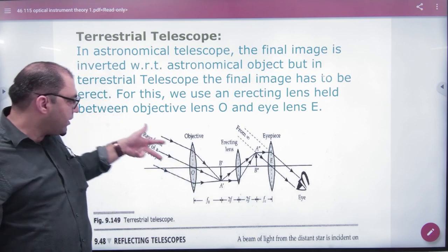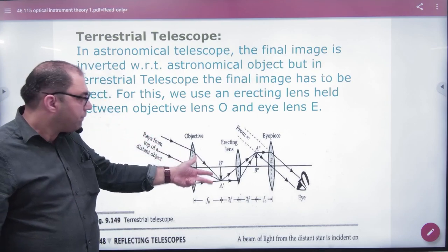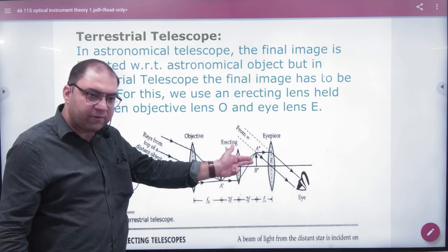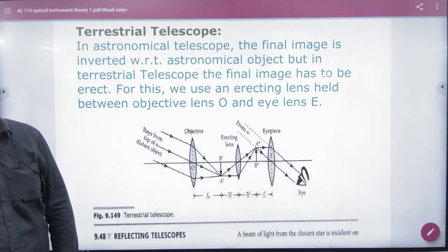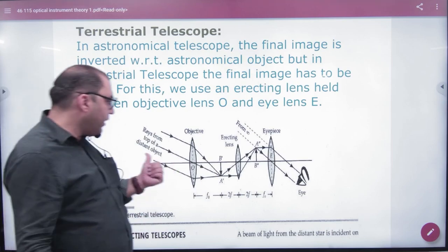How does it work? The object creates an image through the erecting lens, which makes it a straight, upright image instead of an inverted one. And the other thing is that...